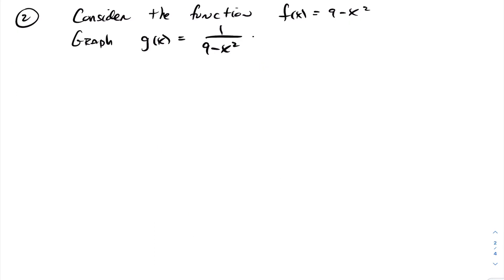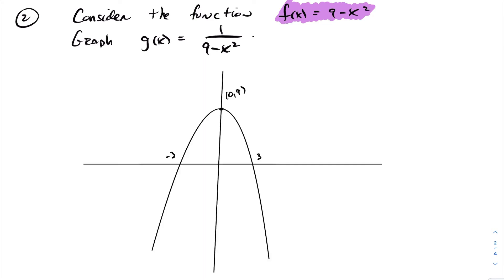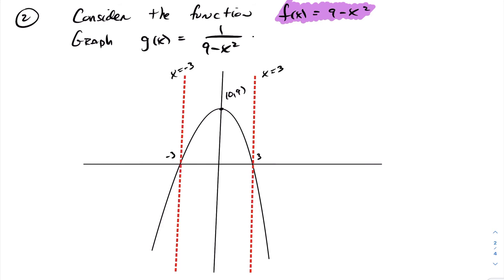Let's look at another example: graphing the reciprocal of a quadratic function. We'll first look at 9 minus x squared — a quick sketch shows a downward-opening parabola with roots at plus or minus 3 and a y-intercept at 9. When graphing the reciprocal function, what were once roots now become vertical asymptotes at plus or minus 3. The y-intercept of 9 becomes a y-intercept of 1 over 9 for the reciprocal.